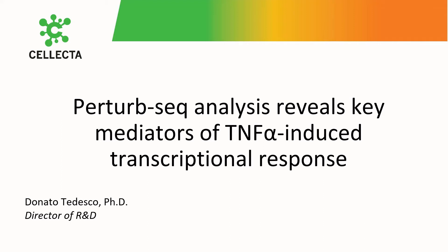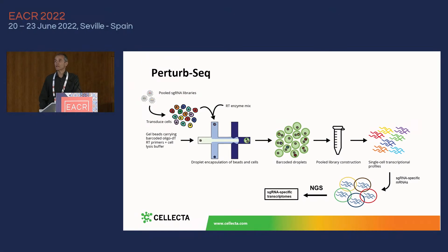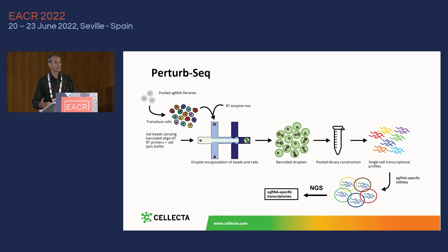Today I'm going to talk about PerturbSeq. PerturbSeq is a technology that allows the discovery of transcriptional responses to specific genetic and epigenetic perturbations, and importantly allows that to be done in a massively parallel fashion. Multiple hundreds or thousands of specific independent genomic perturbations can be assessed for their effect on the cell transcriptome.